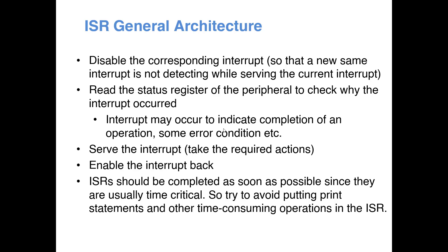Then we check the status register of the peripheral to find out what caused this interrupt, because not only task completion but other things — like errors — can also generate an interrupt. For example, a printer paper jam can create an interrupt signal. We read the status register and take the necessary action based on its value: if it is completion of an operation we decide what to do next; if it is an error we correct it. Once the interrupt is serviced, we re-enable the interrupt and return from the ISR.